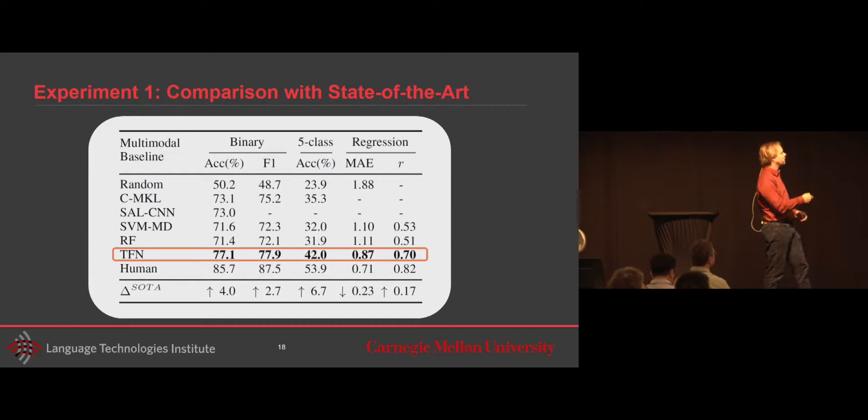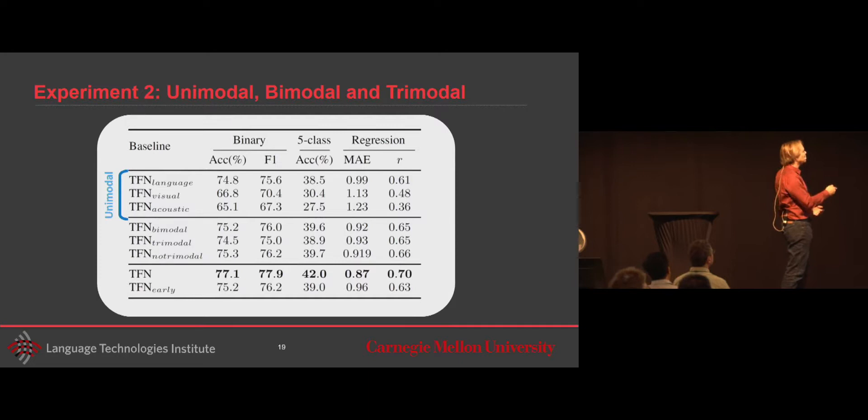It is very important when you look at this to understand why we got this improvement over state-of-the-art. So we looked at in unimodal. This is unimodal. We're taking the model by taking away some of the modalities. We see great language, not surprising, being the most important. This is using just bimodal, just trimodal, using bimodal and unimodal, and finally using them. And this is using just a simple feed-forward that I presented earlier.